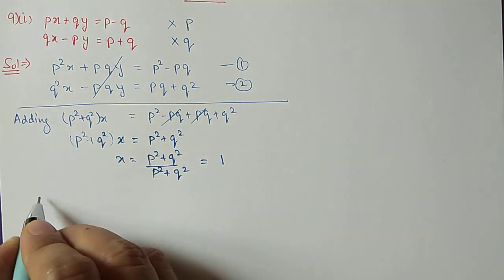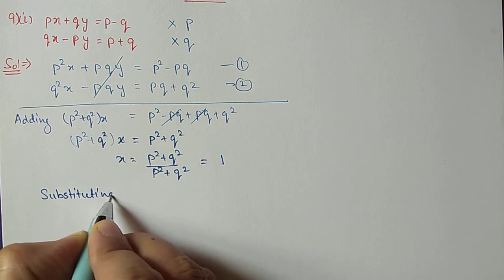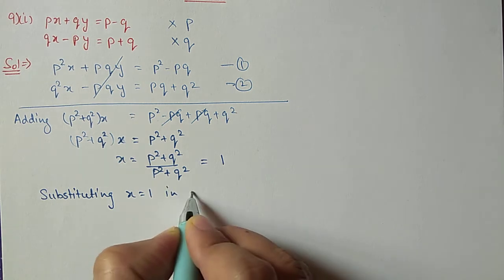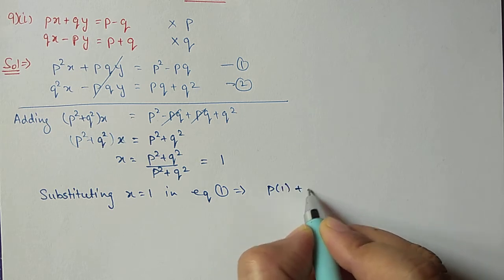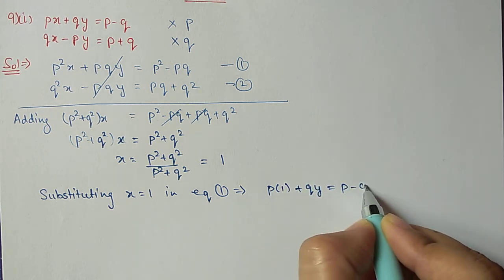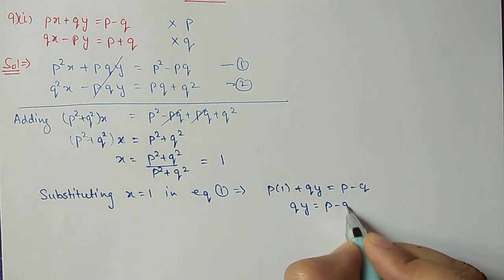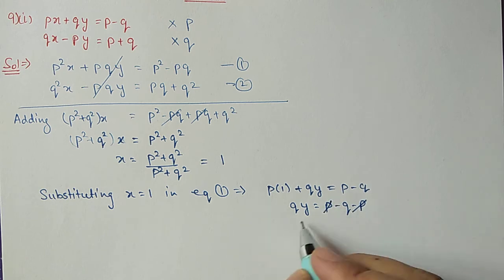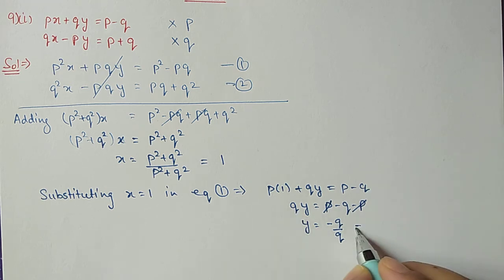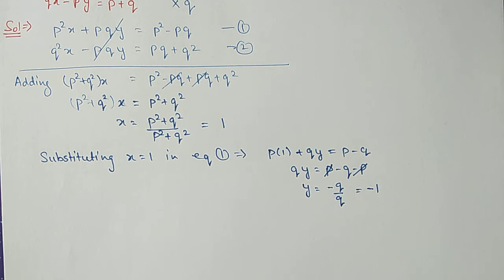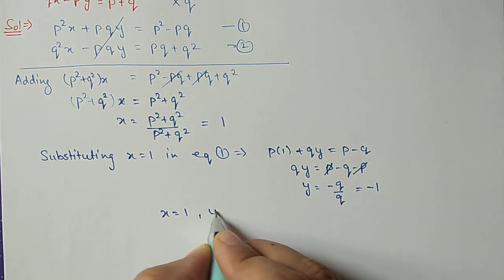and it cancels out — numerator and denominator are the same — so X equals 1. Now we substitute this X value into equation 1. With X equal to 1: P times 1 plus QY equals P minus Q. Shifting P to the other side: QY equals P minus Q minus P, so P cancels. Y equals minus Q divided by Q, which cancels, giving Y equal to minus 1. So X is 1 and Y is minus 1.